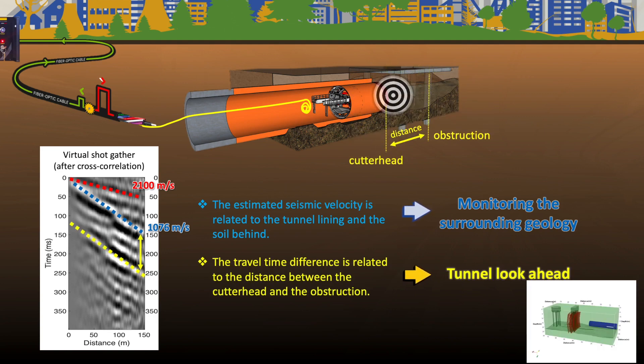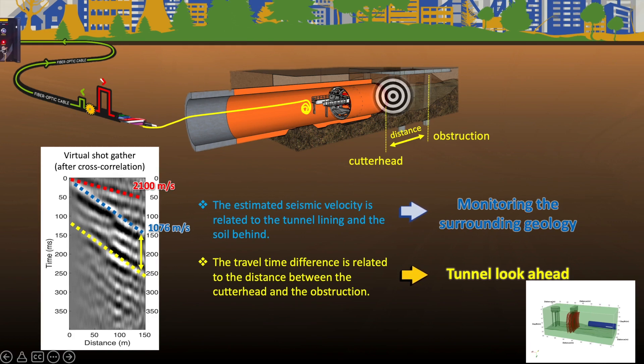Additionally, the shot gather shows another event with the same velocity as the blue one, which appears 100 ms later. It could be the reflection from an obstruction in front of the TBM. Using the travel time information, we can locate the apparent obstruction. So, the figure shows rich information in DAS recordings for Earth property monitoring around and in front of the tunnel.